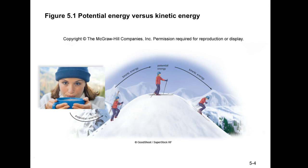When you first sit on the swing you have potential energy, then as it swings and reaches the highest point — that brief pause before swinging back — that's potential energy again. As it swings all the way down it's kinetic energy, reaching the initial position is potential, then swinging backward to its highest point is kinetic converting to potential, and forward again is kinetic energy.